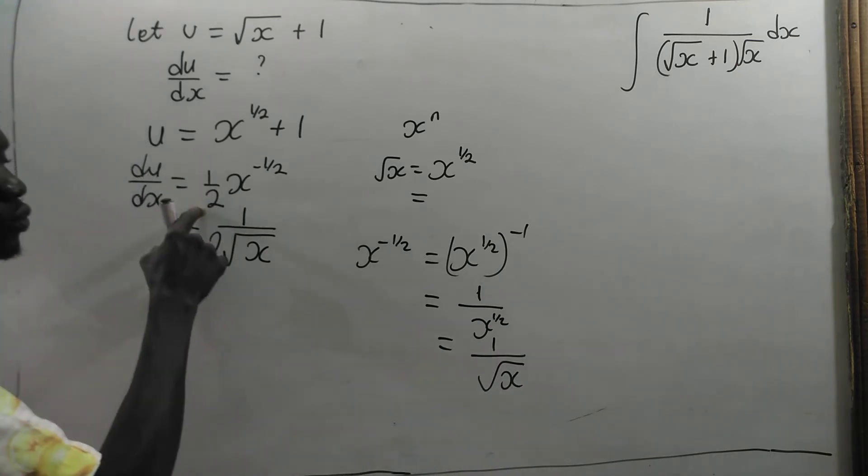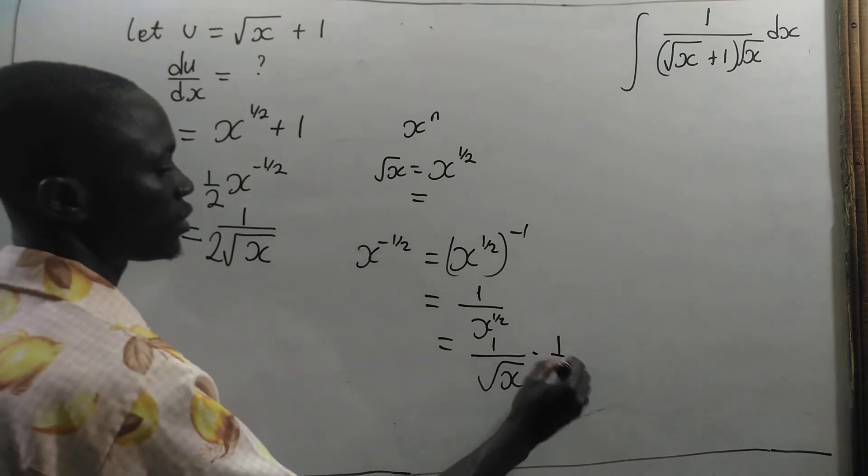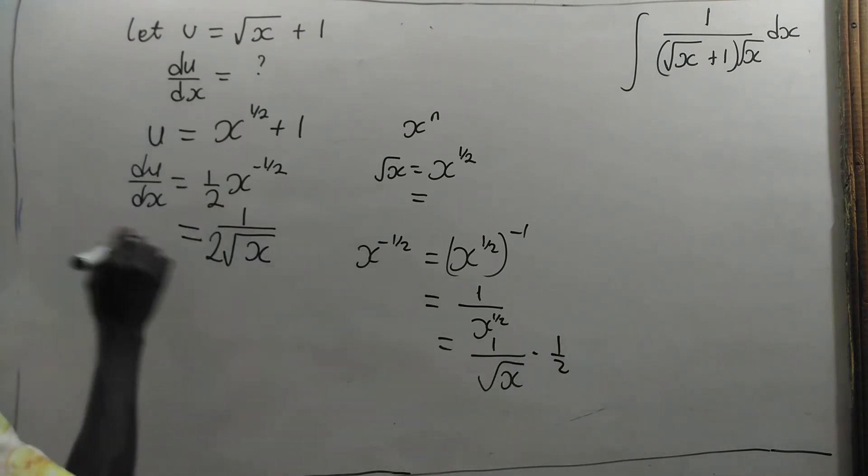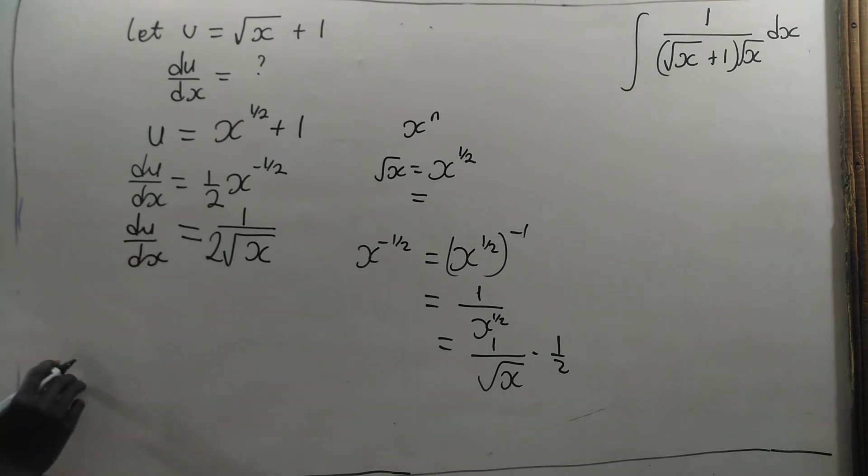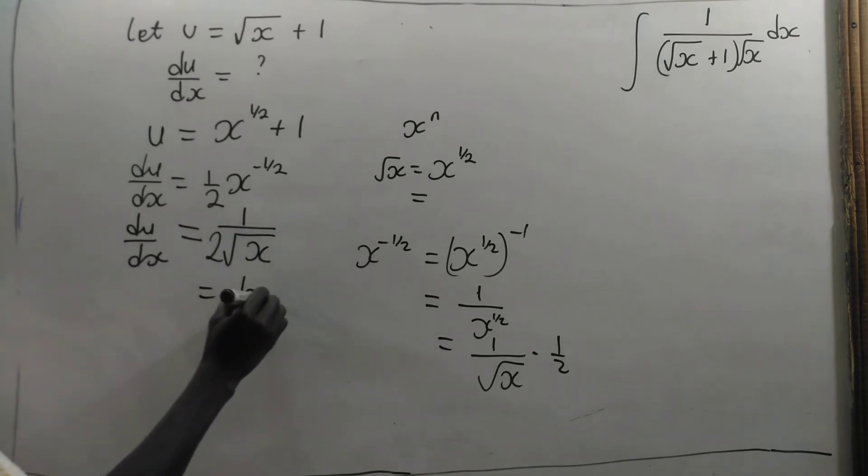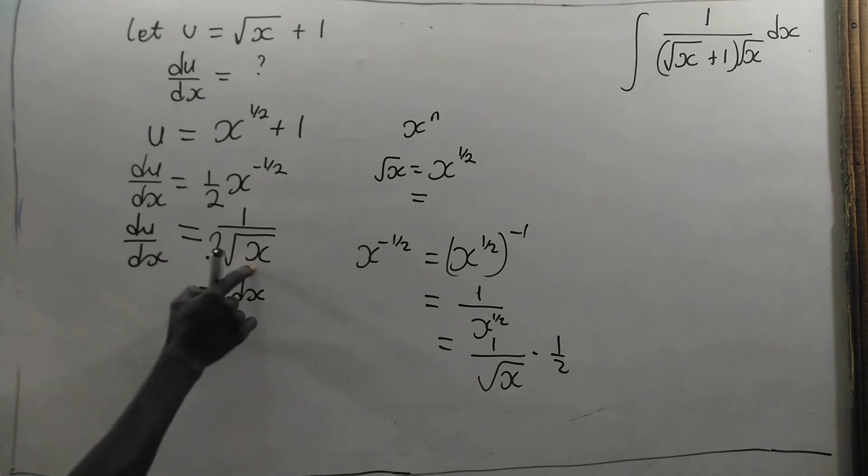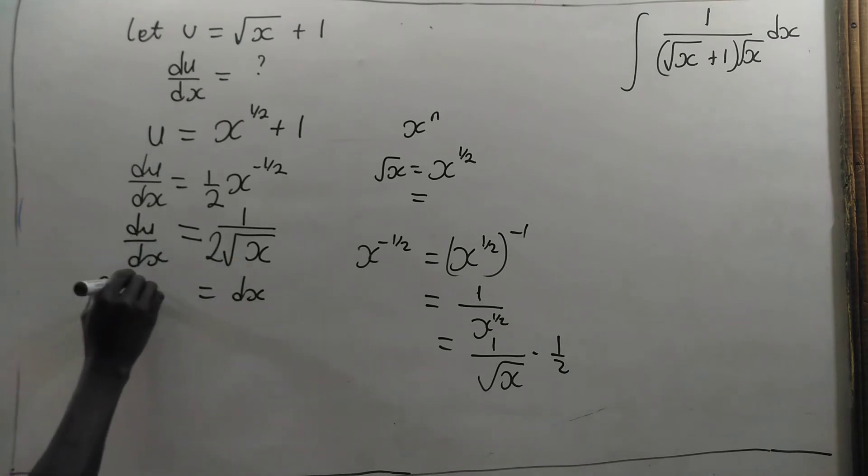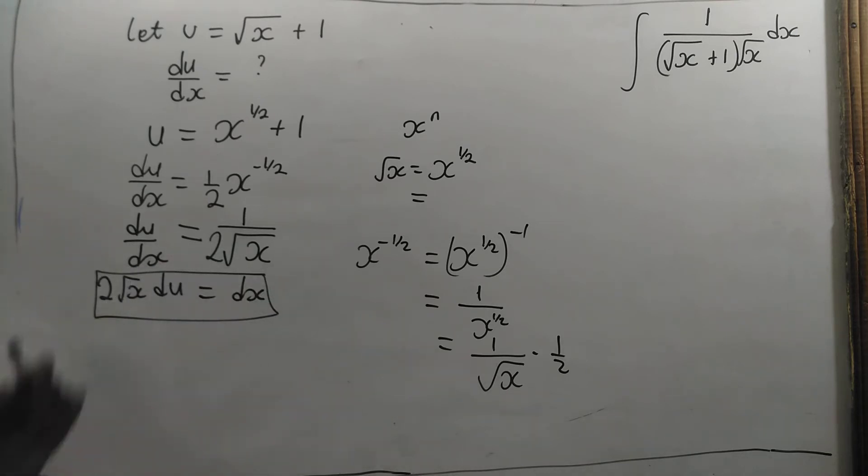And I have 1 over 2. So if I multiply this by 1 over 2 I will get back to what I have here. So that is our du/dx. Now let's make dx the subject. You multiply du by this, you are going to get 2 root x du. So this is our dx. Now let's go and do the substitution.